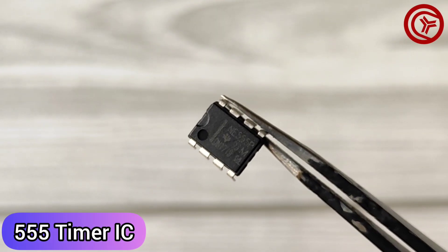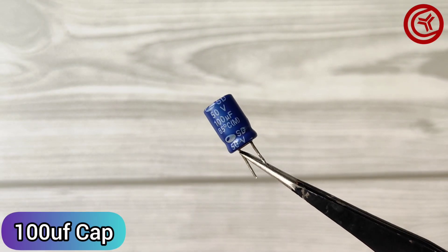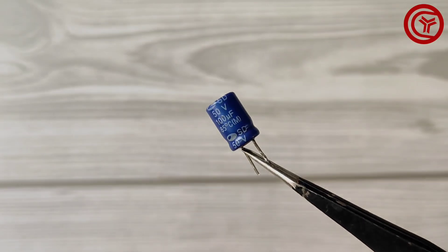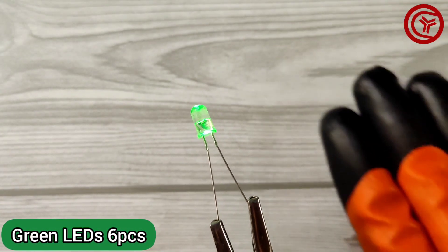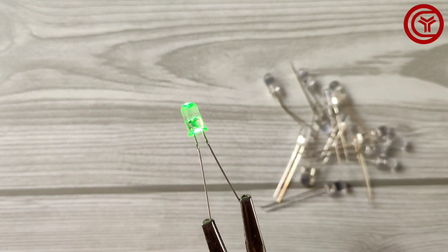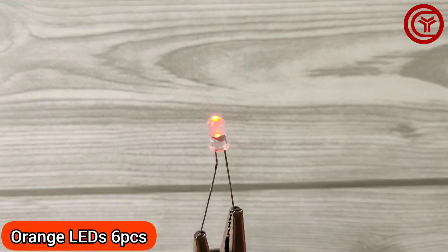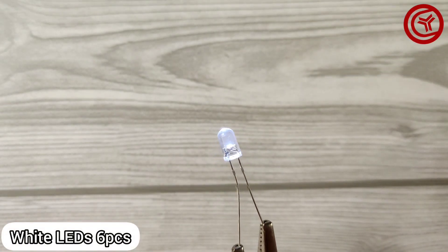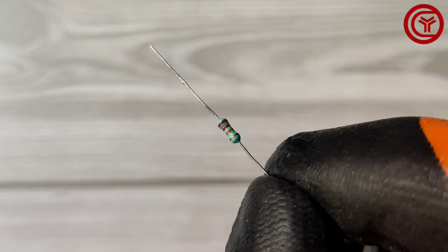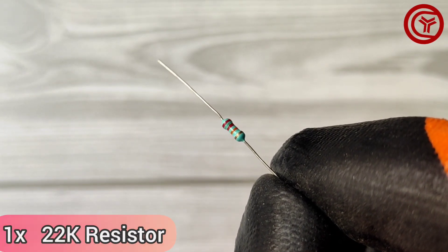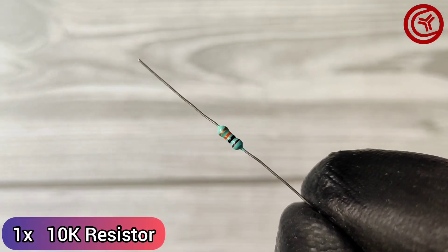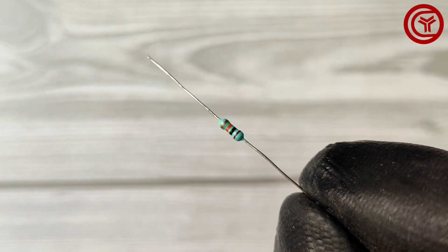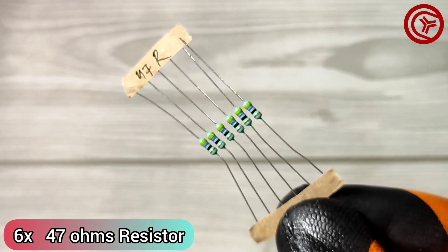For that we need NE555 IC, a 100 UF capacitor, 6 pieces green LEDs, 6 pieces orange LEDs, 6 pieces white LEDs, a 22 kiloohms resistor, a 10 kiloohms resistor, and 6 pieces 47 ohms resistor.